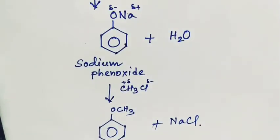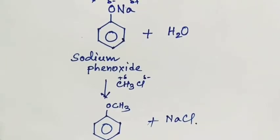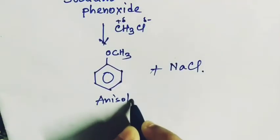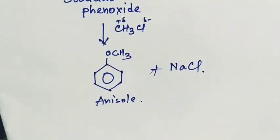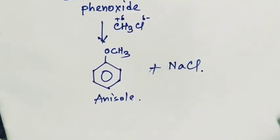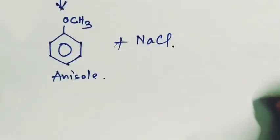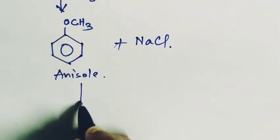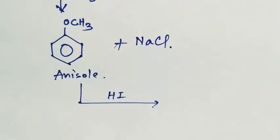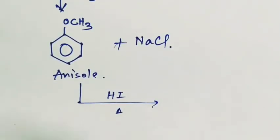So in this way you can form anisol from phenol. Now let's see how to prepare phenol from anisol. In this anisol, if you add hydrogen iodide HI and apply heat, what will happen?